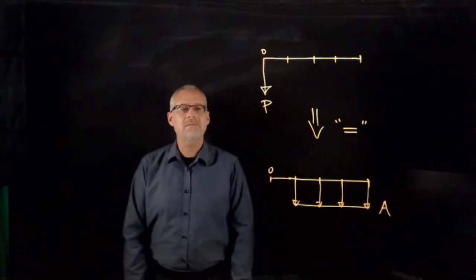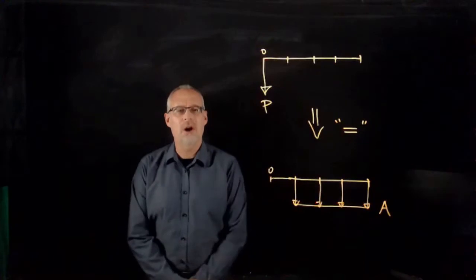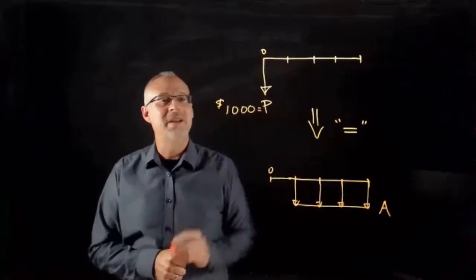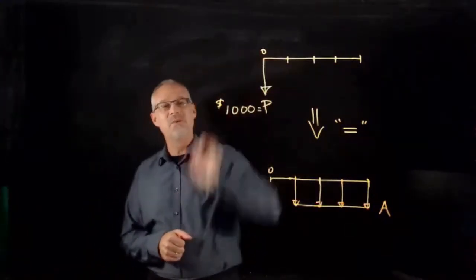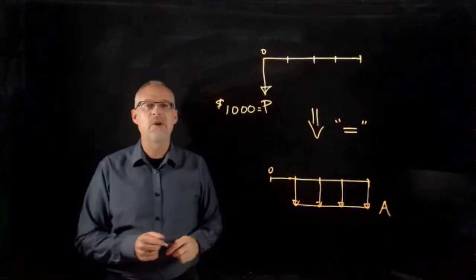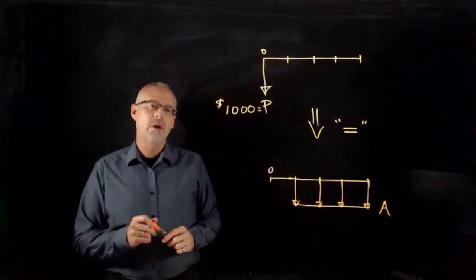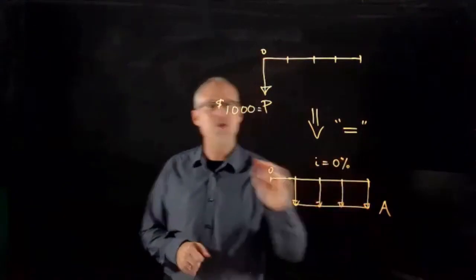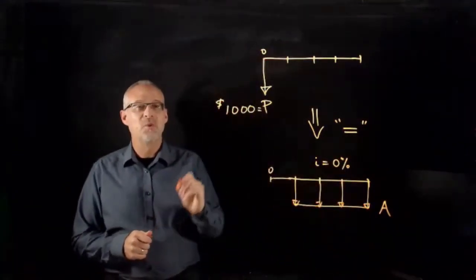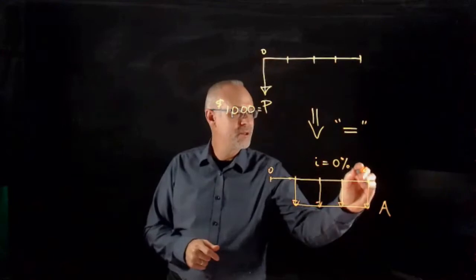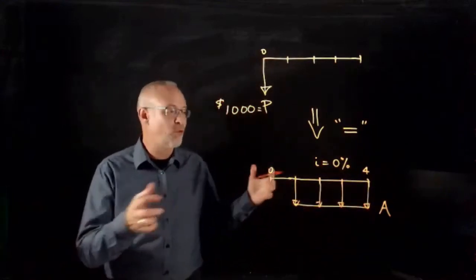If I buy a really cheap used car — let's say a $1,000 car at time t equals zero — and I own that car for four years, and interest rates are zero percent, what is the equivalent annual cost? Meaning, I spread out the cost over four years.